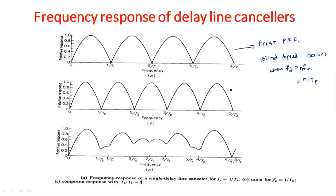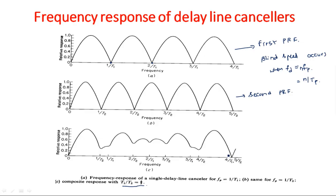Blind speed occurs when fd equals integral multiples of fp, written as n/Tp — so 1/Tp, 2/Tp, 3/Tp, and so on. At every occurrence of n/T1, the response is zero. Similarly, for the second pulse repetition frequency, the output response is zero at n/T2 — that is, 1/T2, 2/T2, 3/T2, 4/T2, and so on. When we take the composite response of these two, the result will not always be zero.